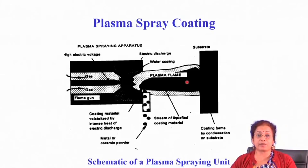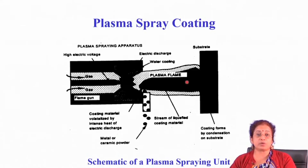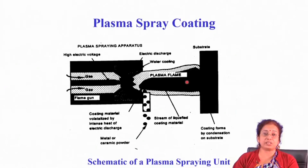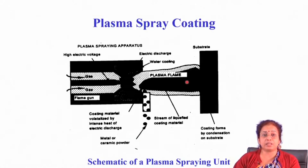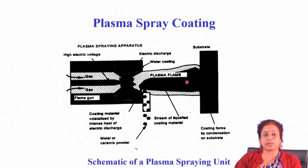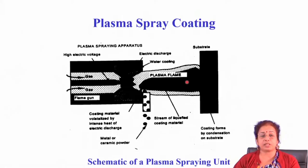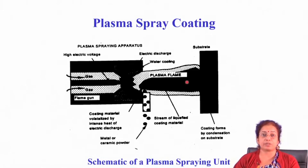A significant advancement over these techniques is plasma spray coating. In plasma spraying, very high heat is generated at the tip of the torch. While heat content in flame spraying or arc spraying is around 1500 to 1700 degrees Celsius, in plasma spraying it can be as high as 25,000 to 30,000 degrees Celsius.